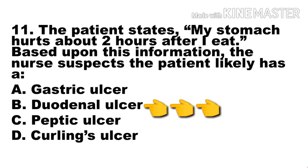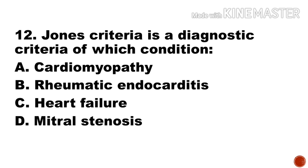Next question: Jones' criteria is the diagnostic criteria for which condition? a) cardiac myopathy, b) rheumatic endocarditis, c) heart failure, d) mitral stenosis. Option b, rheumatic endocarditis, is the right answer. Modified Jones' criteria includes carditis, arthritis, chorea, erythema marginatum, and subcutaneous nodules. Erythema marginatum is a non-itchy red ring seen on the extensor surface of the body.